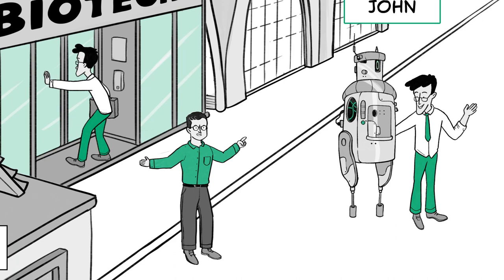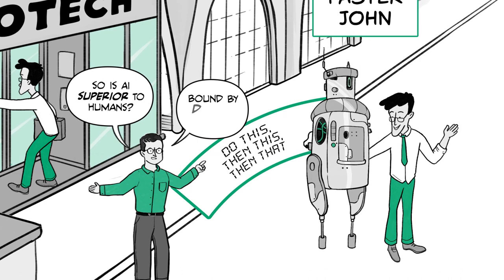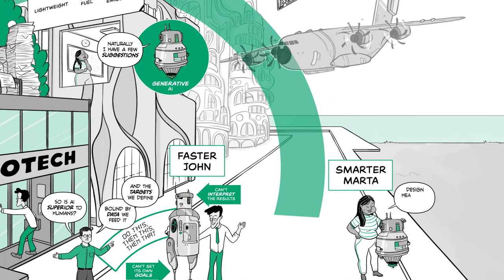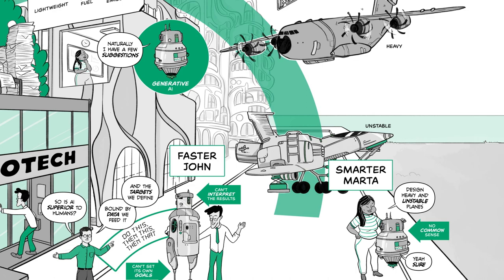So, is AI superior to humans? Well, AI simply does what it's told, bound by the data we feed it and the targets we define. John's AI can't set its own goals or interpret the results. Marta could even tell her AI to design a heavy, unstable aeroplane, and it wouldn't have the common sense to question her demand.